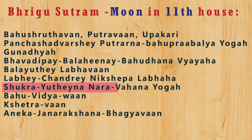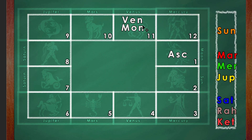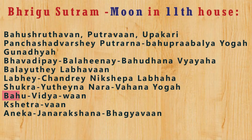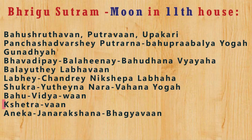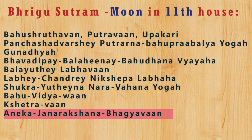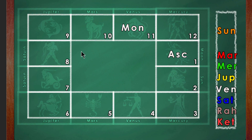'Shukra Yuthena Naravahana Yogaha' — here he says if the moon is with Venus, then the person will be the owner of conveyances pulled by men — a palanquin, that's what Sage Bhrigu is referring to. But it may also mean that the vehicle of this person's life is being pushed by men. Today in a democratic government the outcome of elections is decided by the voters. So a politician having this combination will be fully favoured. 'Bahu Vidyavan' — he will be highly educated, or maybe very skilled in a particular area. And will own lands — 'Kshetravan'. 'Anekajanarakshana' — he will be the protector of a large number of people. 'Bhagyavan' — he will be fortunate, and the protector of others may hint at the possibility of a person being a politician.